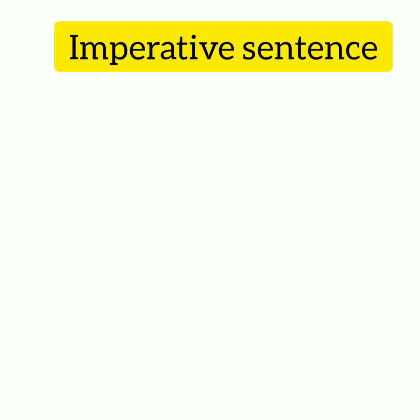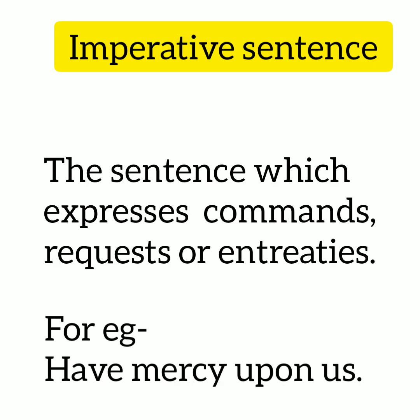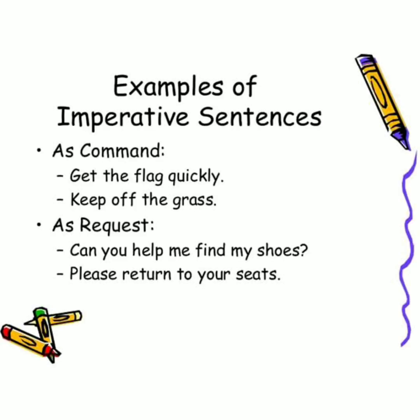The next kind of sentence is the imperative sentence. The imperative sentence expresses commands, requests, or entreaties — where entreaties means a humble request. For example, 'Have mercy upon us.' Imperative sentences as commands: 'Get the flag quickly,' 'Keep off the grass.' Imperative sentences as requests: 'Can you help me find my shoes?' 'Please return to your seats.'